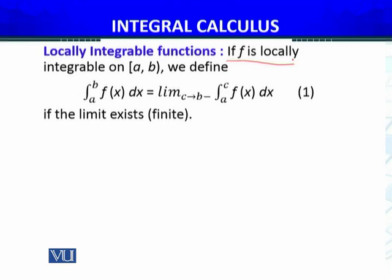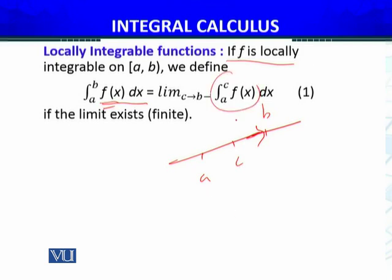If f is locally integrable on the open interval (a, b), we define the improper integral from a to b of f(x) dx. Because b is not included (open interval), we define this integral as the limit as c approaches b from the left of the integral from a to c of f(x) dx, for every c lying between a and b but not exactly equal to b, since b is open.